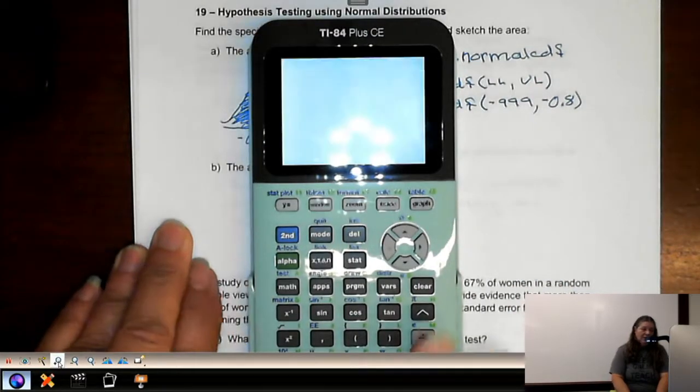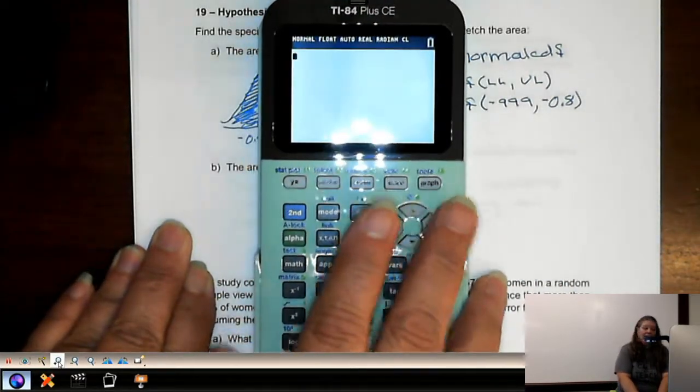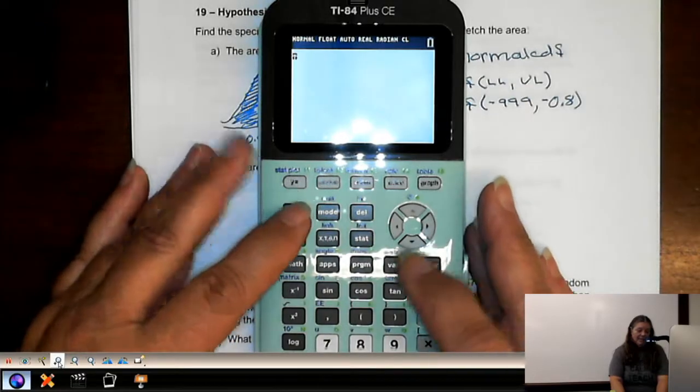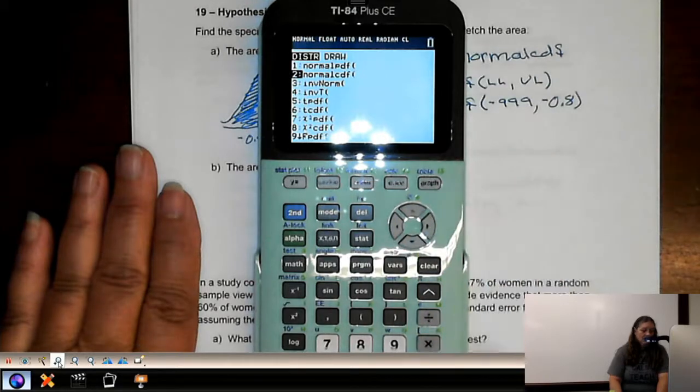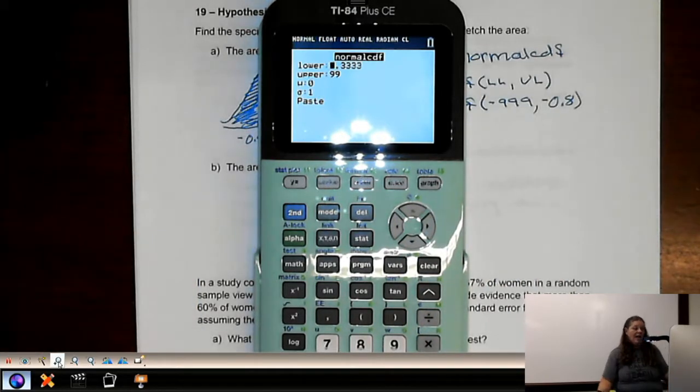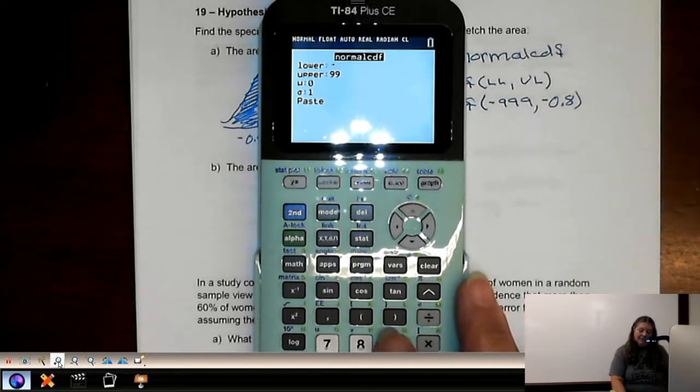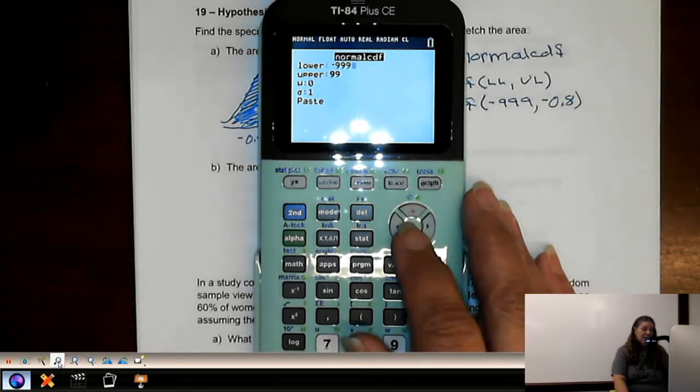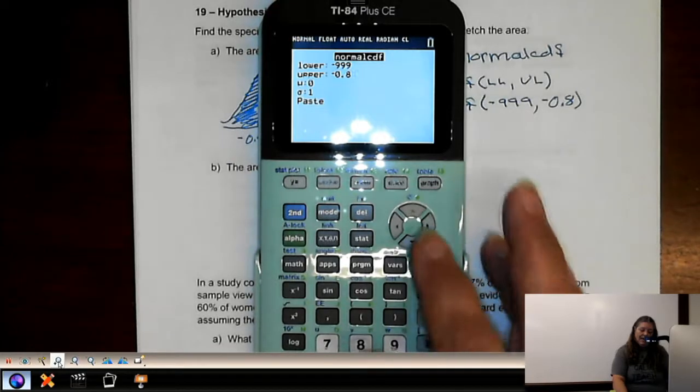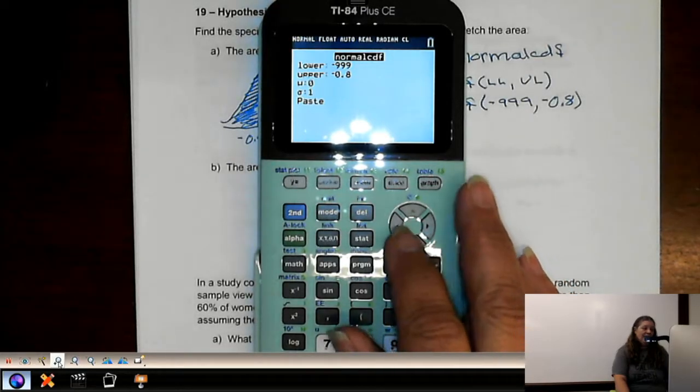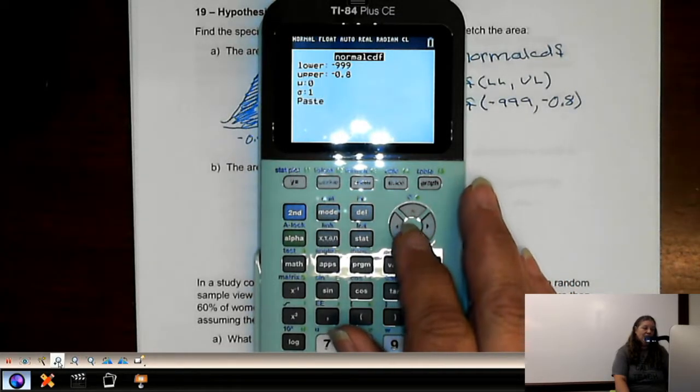So let's look at the calculator. So that's second VARs, option number 2, which is normal CDF. Now, I have a calculator that asks me for the different values. So the lower limit is a negative 999. The upper limit is a negative 0.8. And then just leave mean and standard deviation as 0 and 1.